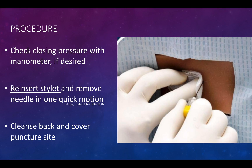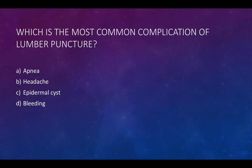When concluding your procedure, check closing pressure if desired — especially if you're looking for or relieving pressure from pseudotumor. Once done, reinsert your stylet — reinsert that stylet — and then remove the needle in one smooth motion. Cleanse the back and cover the puncture site.